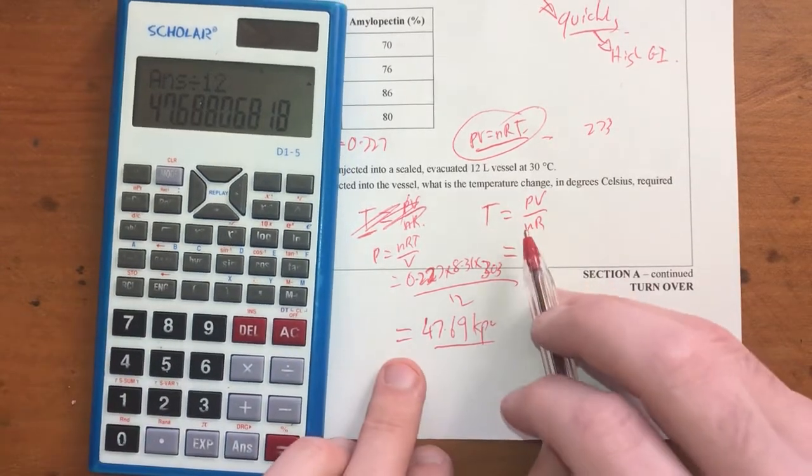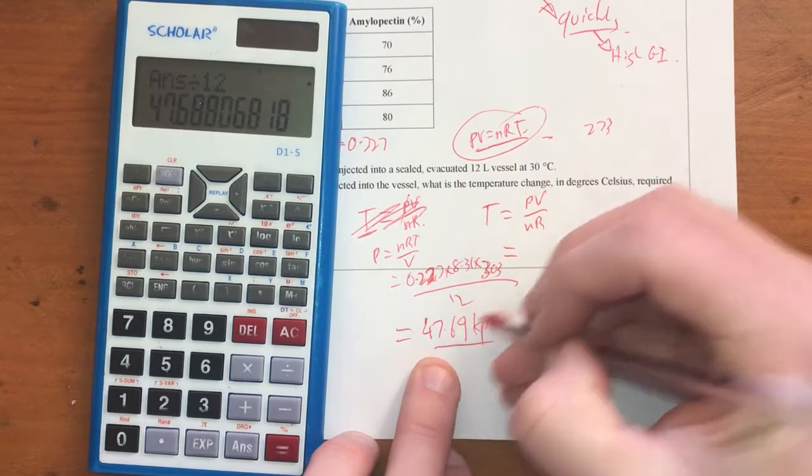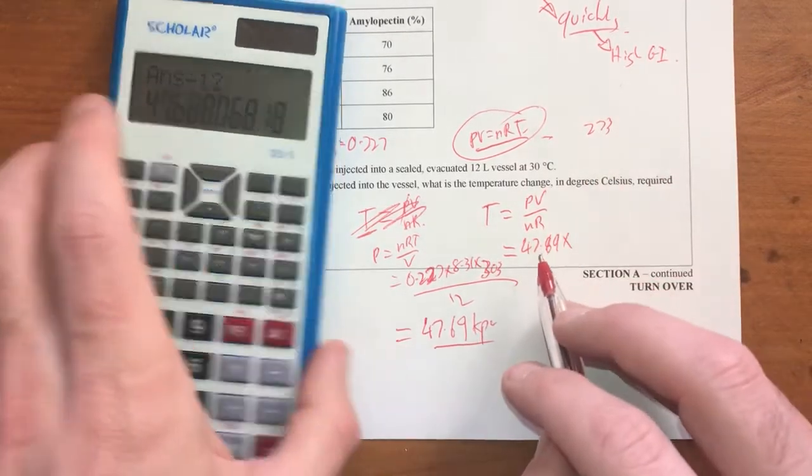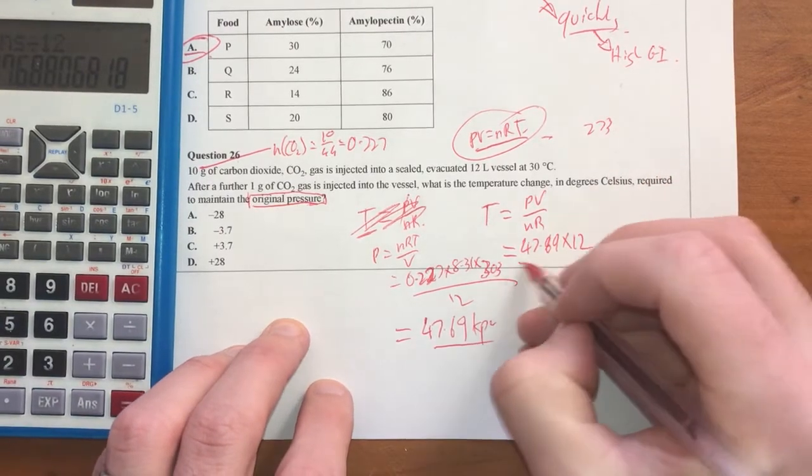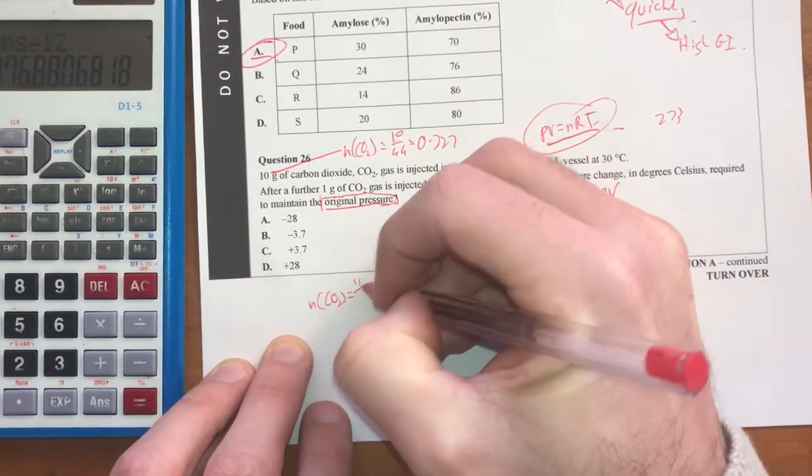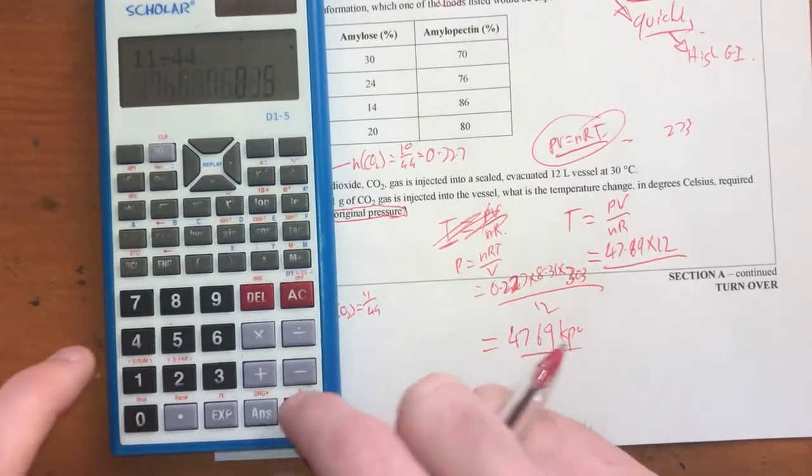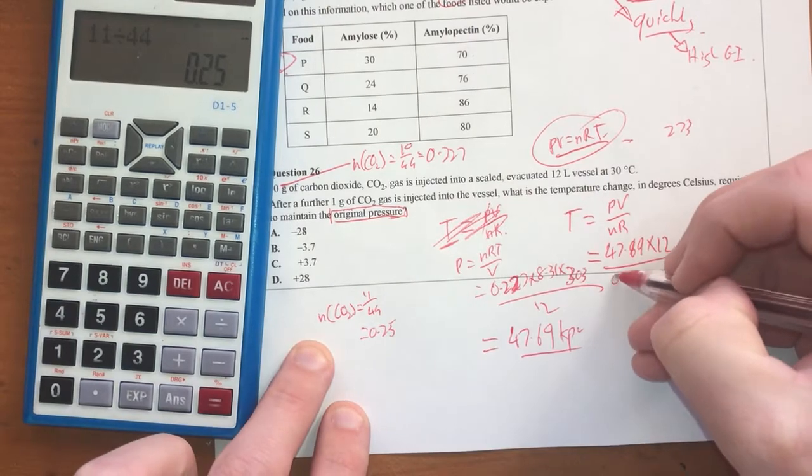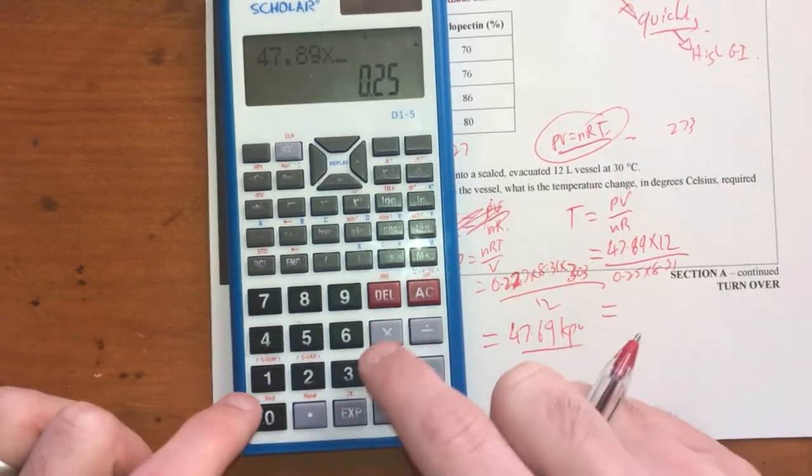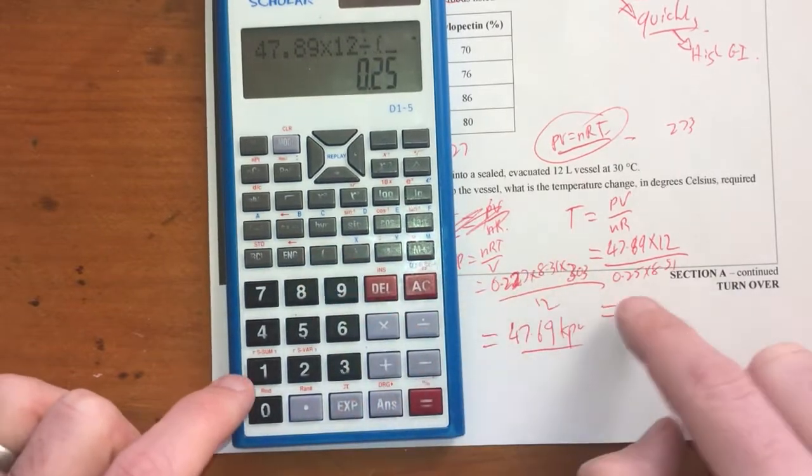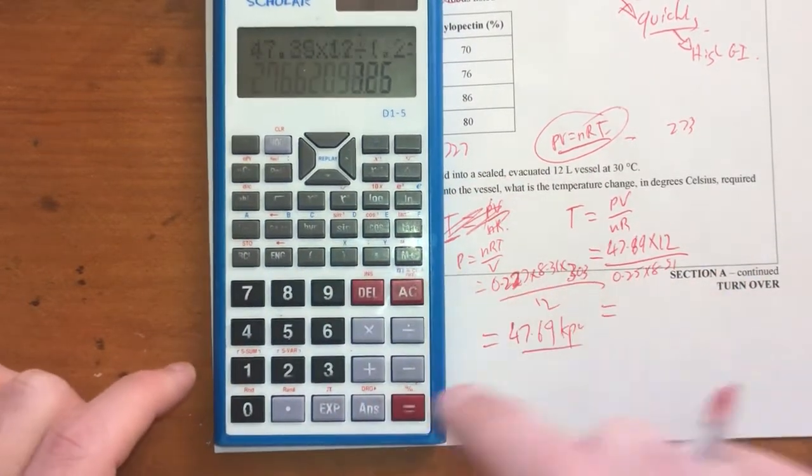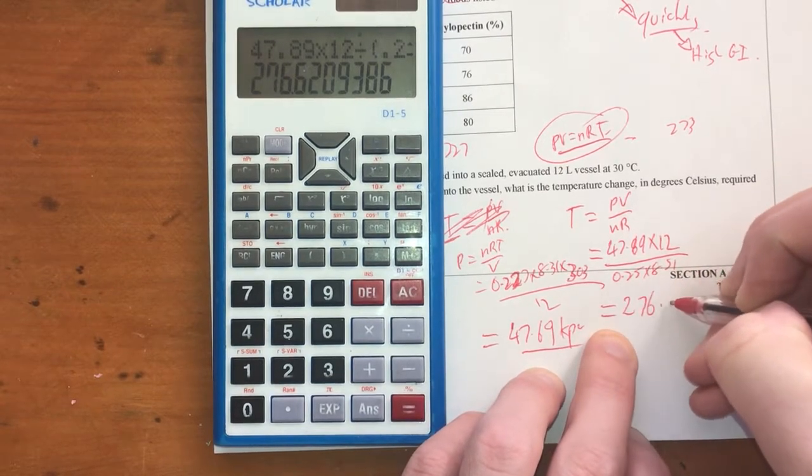So therefore, I need to use this thing over here. So therefore, my pressure is 47 because we need to maintain the same pressure. 47.69 times by my volume, because I'm pretty sure we have the same volume, it hasn't changed, divided by number of moles. Now, my number of moles here, I've added in one gram. So number of moles the second time around will be 11 over 44. It should be 11 divided by 44. Yeah, 0.25. That's divided by 0.25 times 8.31. So 47.69 times 12 divided by 0.25 times 8.31 equals 276.6.